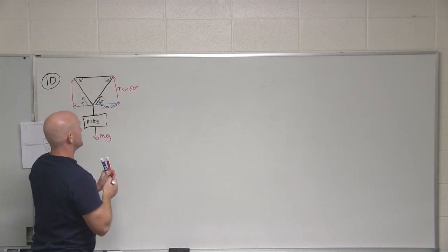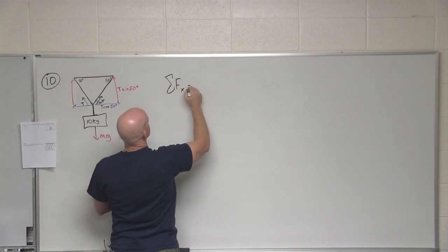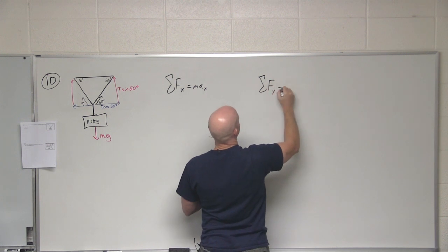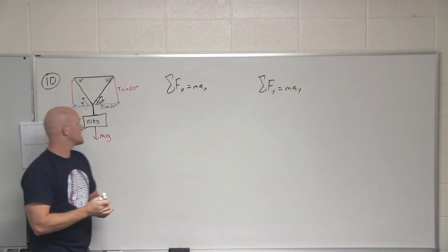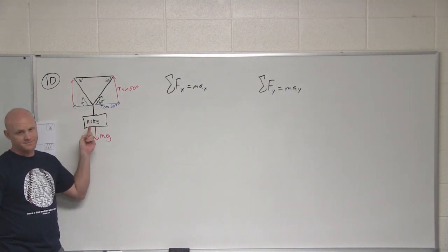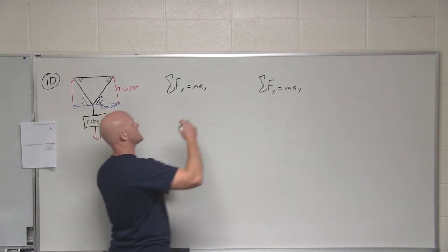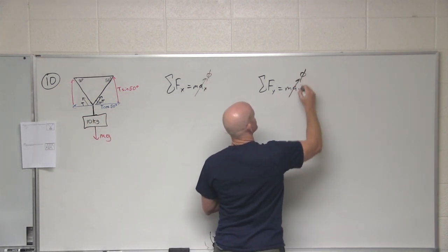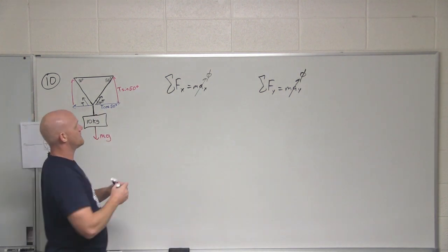So in this case, two-dimensional problem: sum of the forces in the x direction equals ma, sum of the forces in the y direction equals ma. So in this case, is this object moving? Not at all. So is there any acceleration in any direction? Not at all. So in this case, this is an equilibrium and the sum of the forces in both directions are going to add up to zero.